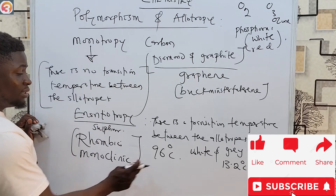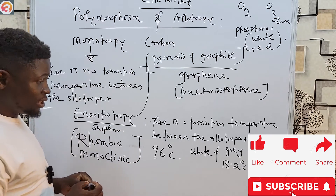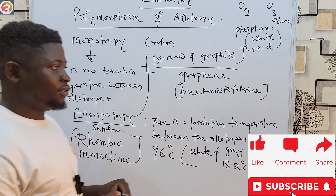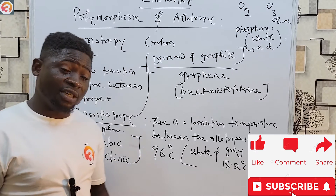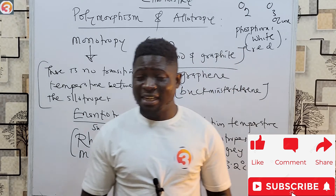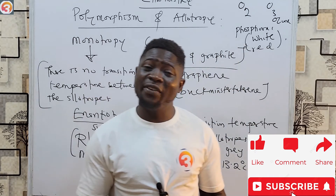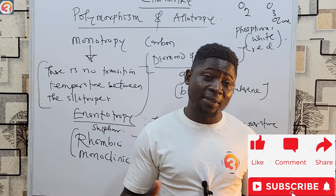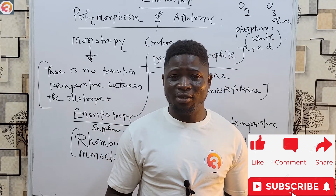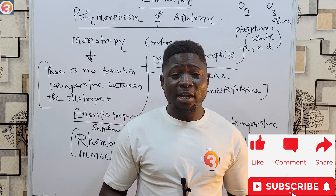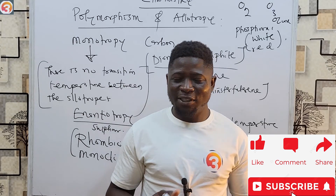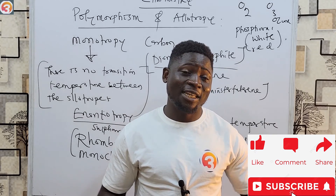Rhombic and monoclinic sulfur have a transition temperature of 96 degrees Celsius, while white and gray tin have a transition temperature of 13.2 degrees Celsius. Please give this video a like, subscribe to this channel, share this video, and download the OTD School Jump app to solve past questions. Thank you for watching.